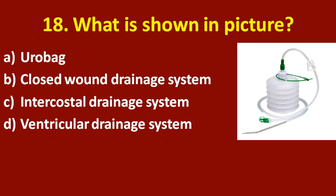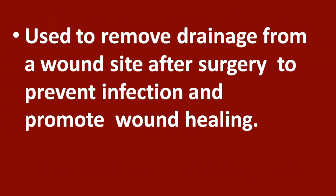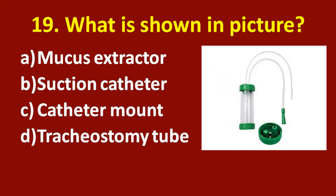The main advantage is that pressures and oxygen concentrations can be maintained during suctioning. Eighteenth question: what is shown in the picture? Option A: urobag. Option B: closed wound drainage system. Option C: intercostal drainage system. Option D: ventricular drainage system. The correct answer is option B, closed wound drainage system. It is used to remove drainage from a wound site after surgery to prevent infection and promote wound healing.